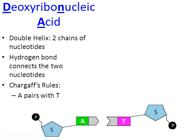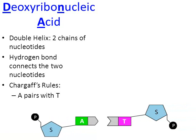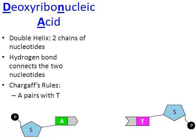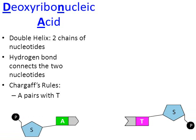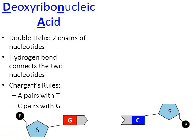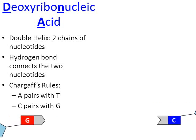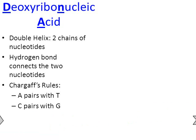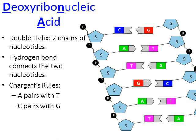One of the things being uncovered in the early 1900s was the structure of DNA. Austrian scientist Erwin Chargaff discovered that the amount of adenine was always equal to the amount of thymine, and that guanine was always equal to cytosine. Now we know why: A pairs with T, and C pairs with G, because they bond together. These are called Chargaff's rules.